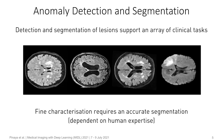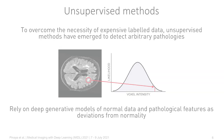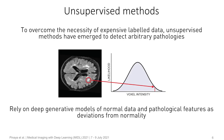Anomaly detection and segmentation support an array of different clinical tasks, like diagnosis, prognosis, and treatment choice. However, the fine characterization of these lesions requires accurate segmentation that is generally dependent on human expertise, making it expensive and time-consuming to obtain, and greatly limiting clinical application. For this reason, several researchers have focused on developing automatic tools using machine learning.